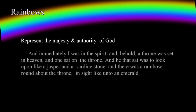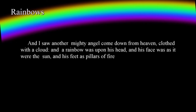Rainbows are also used as a figure to represent God's majesty and authority. In the revelation given to John, he describes God's throne: 'Immediately I was in the Spirit, and behold, a throne was set in heaven, and one sat on the throne, and he that sat was to look upon like a jasper and a sardine stone. And there was a rainbow round about the throne, in sight like an emerald' — Revelation 4:2-3. Later, in the same vision, John describes a heavenly emissary sent out from God: 'I saw another mighty angel come down from heaven, clothed with a cloud. And a rainbow was upon his head, and his face was as it were the sun, and his feet as pillars of fire' — Revelation 10:1. This angel stands on the earth and sea, then signals the start of a judgment from God.